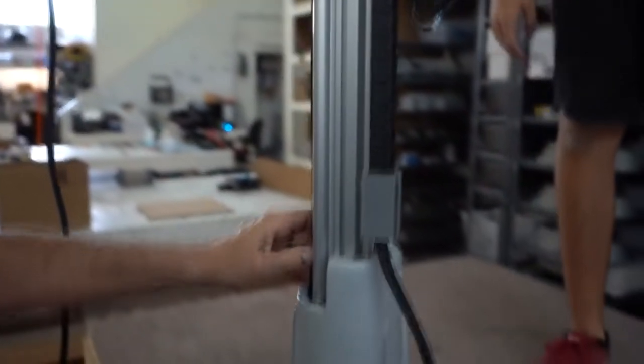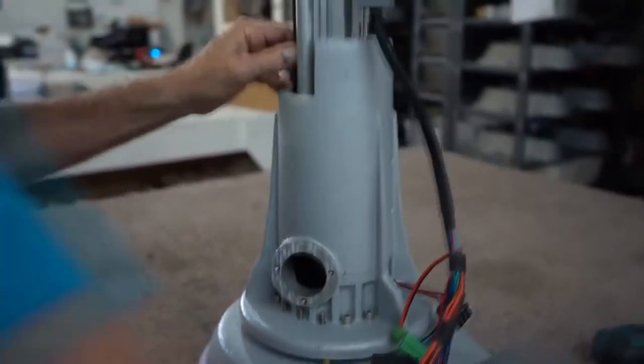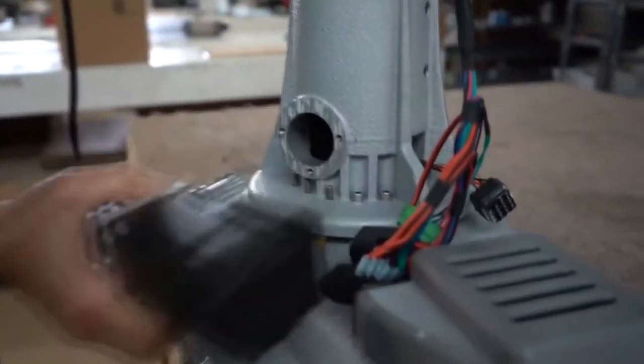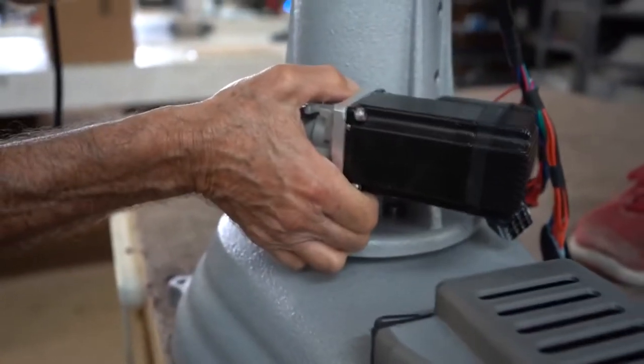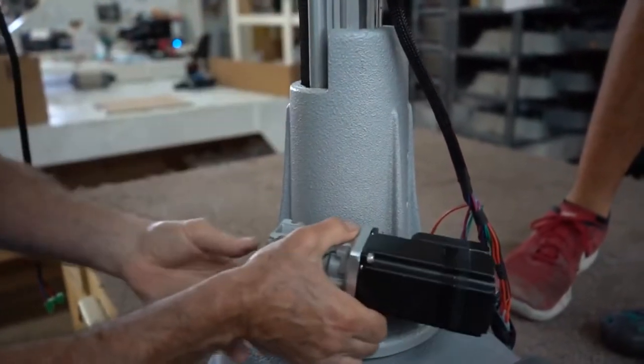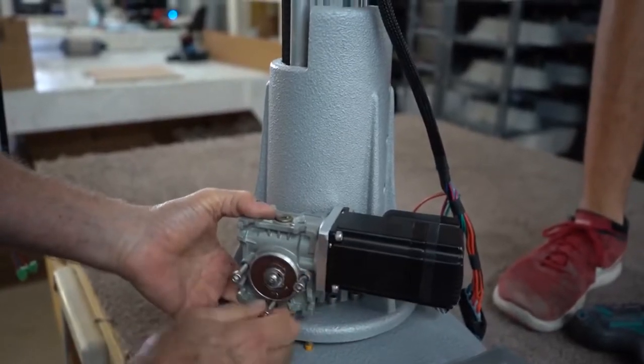After pushing the belt all the way down, there should be enough room inside to insert the Z-gearbox. Ensure that the belt is going around the pulley on the gearbox and that the pulley did not just push the belt out of the way.